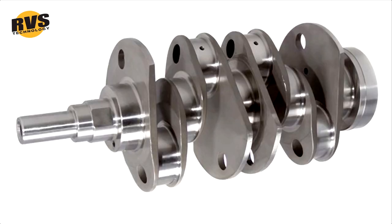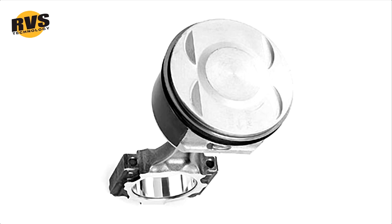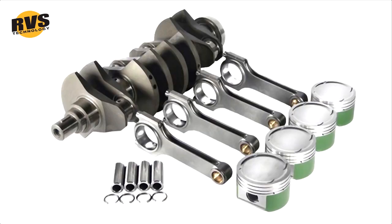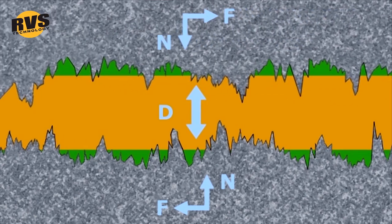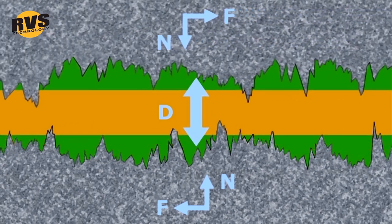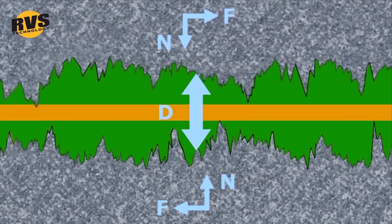RVS treatment is twofold. It restores worn components and improves surfaces subjected to friction. RVS technology efficiently restores, adjusts and protects new and worn components and optimizes component sizes.